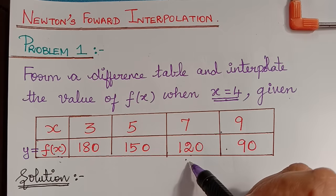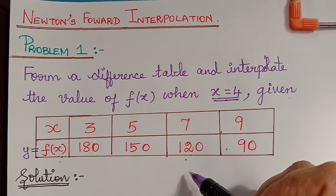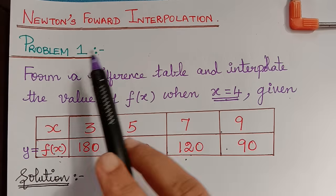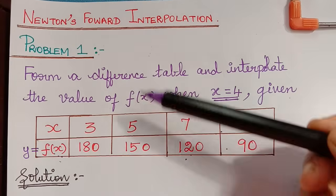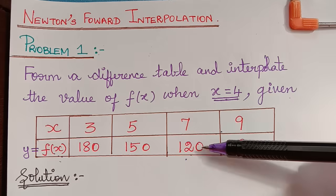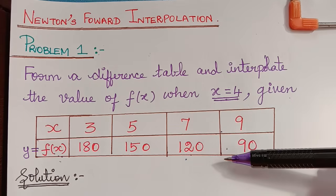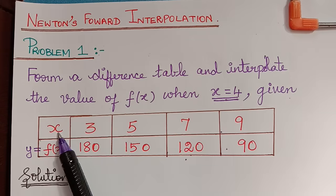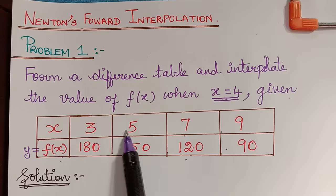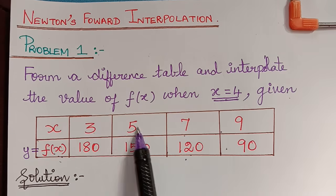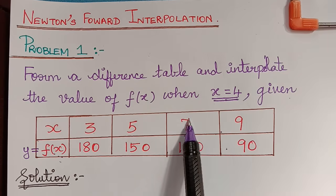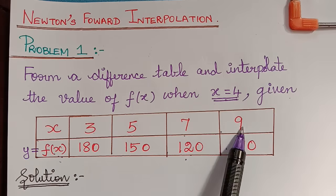Under interpolation we have Newton's forward interpolation, backward interpolation, and Lagrange's interpolation. In the examination we first have to understand what method to use by checking the values of x. If the values of x are placed at equidistant equal intervals, then we apply either Newton's forward or backward interpolation formula. If they are placed in unequal intervals, then we apply Lagrange's interpolation formula.